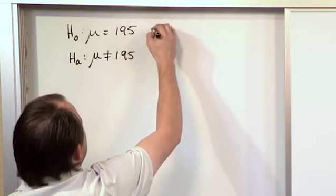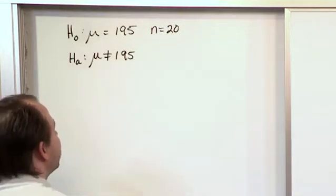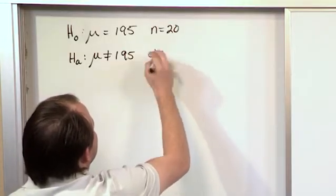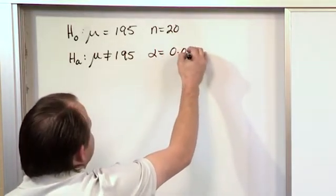So to test this, we select 20 of these things off the assembly line, maybe 20 cars, 20 18-wheelers, whatever. And we decide we want to test this hypothesis at an alpha of 0.05.